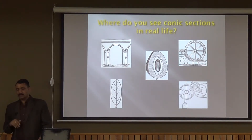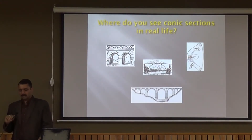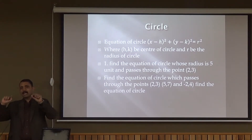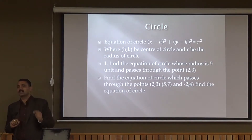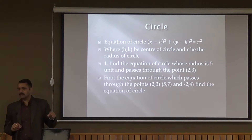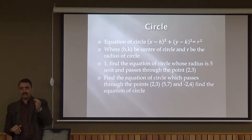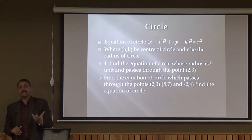Now we are introducing the circle. What is a circle? Suppose we take a fixed point, and we take many points around it, imposing the condition that the distance from this fixed point is always constant. When we join all those points, the figure we get is a circle. The standard equation of a circle is: (x − h)² + (y − k)² = R², where (h, k) indicates the center and R is the radius.